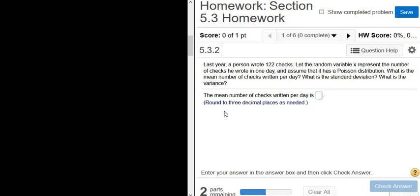So part A, or the first part, wants the mean number of checks written per day. We're told that there were 122 checks written in a year. So this is how many checks were written in the year. We want the daily average. So to get a daily average, we just take this number and divide it by 365.